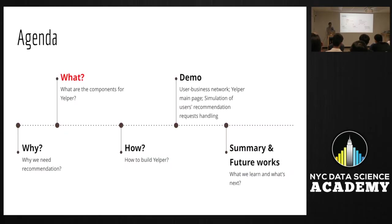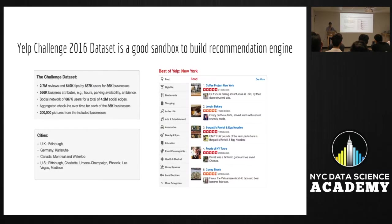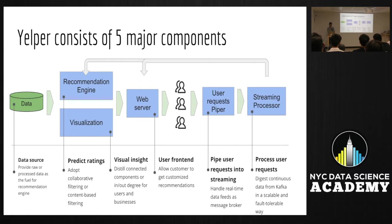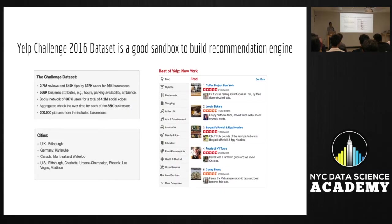Now, what does it take to build a recommendation system? My motivation is that I'm not only interested in the recommendation algorithm itself, but also I want to know what it takes to build the whole thing. We use the Yelp data challenge 2016 dataset. Briefly, it contains user data, business data, review data, and check-in data. But I mainly use two datasets: user and business.